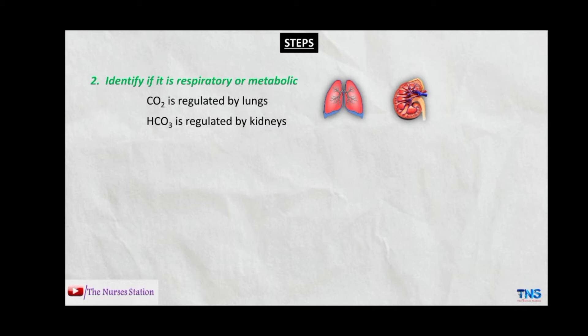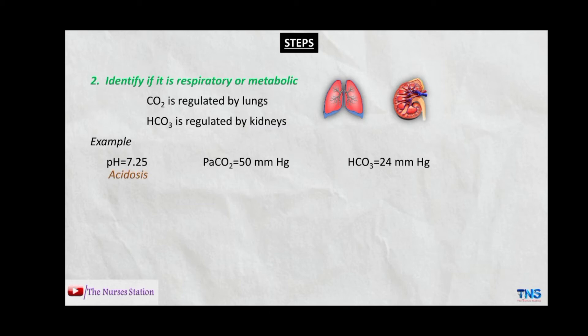Example: pH 7.25, PaCO2 50 mmHg, and HCO3 24 mmHg. The pH is below normal so the patient is having acidosis. PaCO2 is more than the normal range of 35 to 45, indicating a respiratory condition. HCO3 is within the normal range, so we can conclude the patient is having respiratory acidosis.